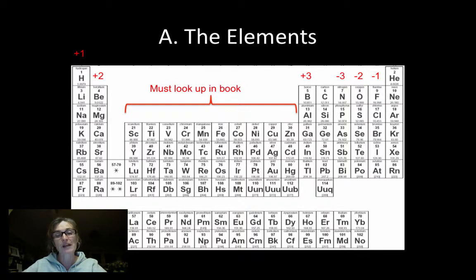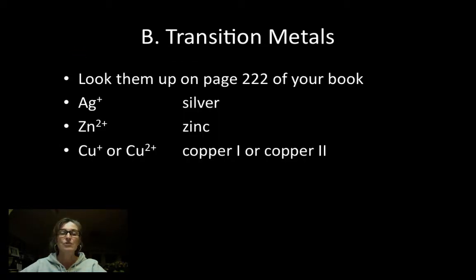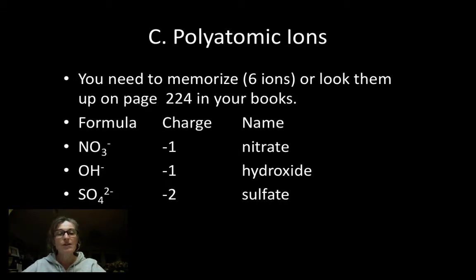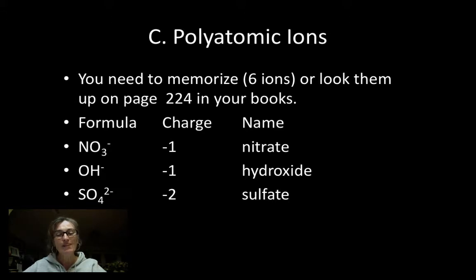Remember, all of our non-metals form negative ions, and all of our metals form positive ions. The noble gases don't form ions at all. Transition metals we need to look up on page 222 of your book. Examples would be silver is a plus one ion, zinc is a two plus ion, and copper can be either a plus one or two plus ion. The plus one ion is called copper one after its charge. Polyatomic ions — you need to memorize six of them. They're the ions in bold on your ion sheet that you glued into your interactive notebook, or you can look up any other ions that are unfamiliar on page 224 in your book.